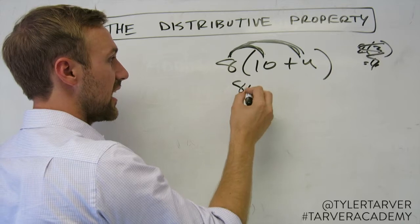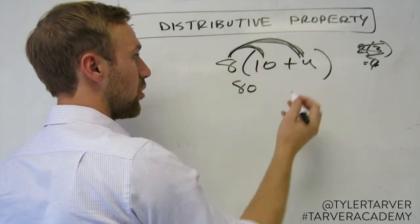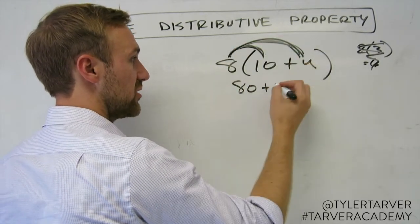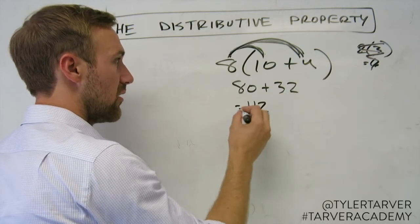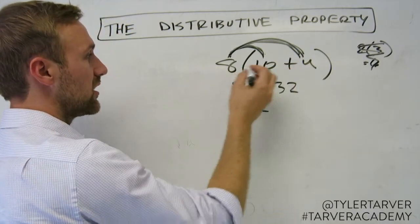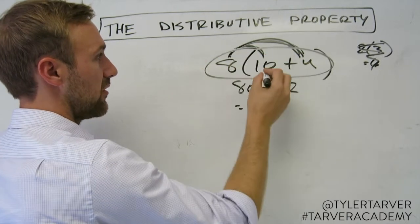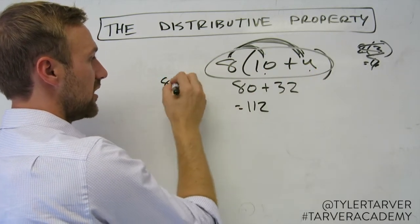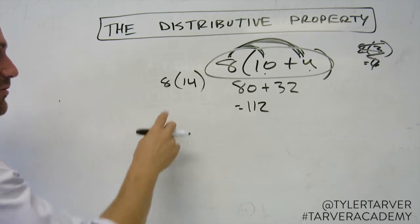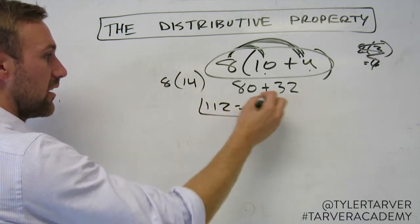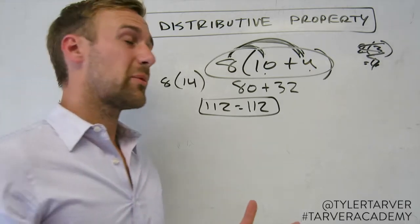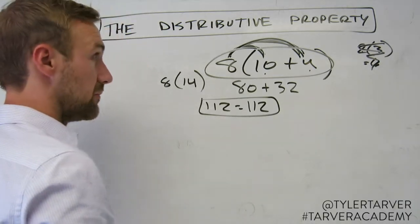For instance, let's say we've got this little fellow here. Distribute that 8 in there. 8 times 10 is 80, then we do 8 times 4 which is 32. Don't forget your sign. Then we add those two together: 112. I could also do it this way - say I didn't distribute, I did 10 plus 4 is 14, so it's 8 times 14, and that's 112. And that's the distributive property.